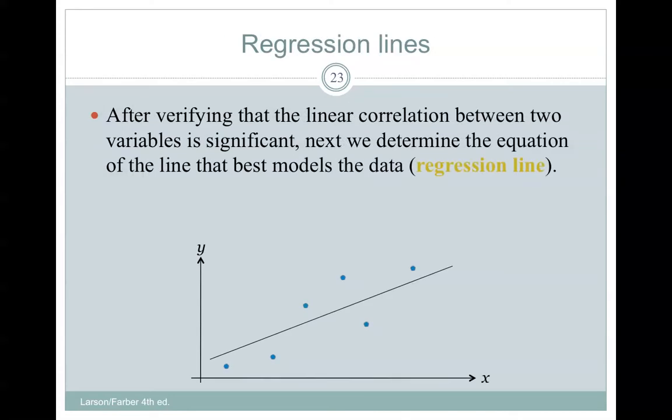So first, what is it? After verifying that a linear correlation between two variables is significant, next we determine the equation of the line that best models the data, which we're going to call a regression line. It can be used to predict the value of y for a given value of x, and vice versa.